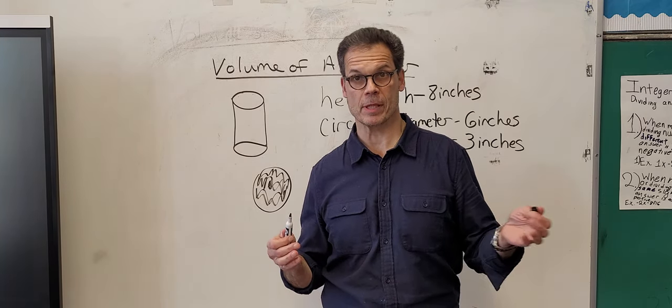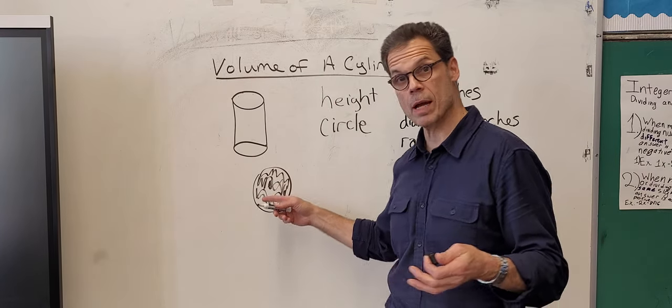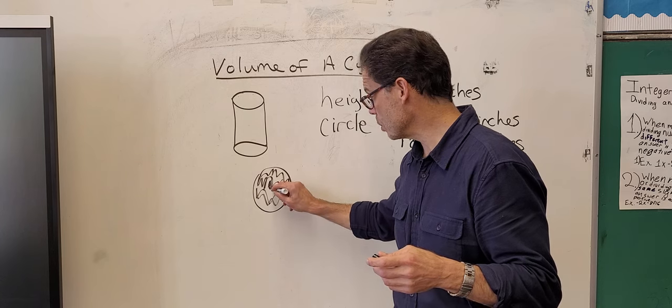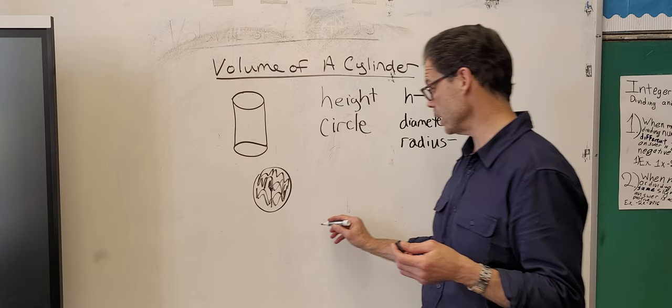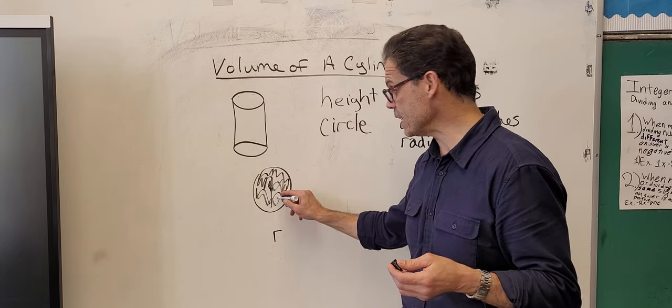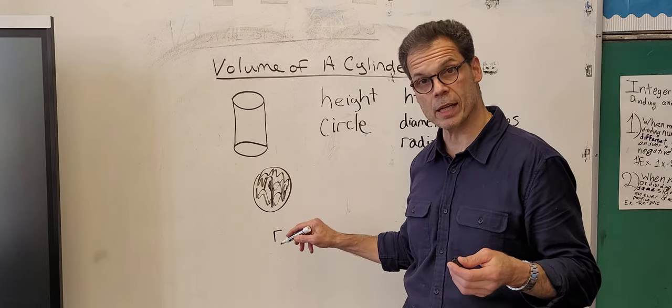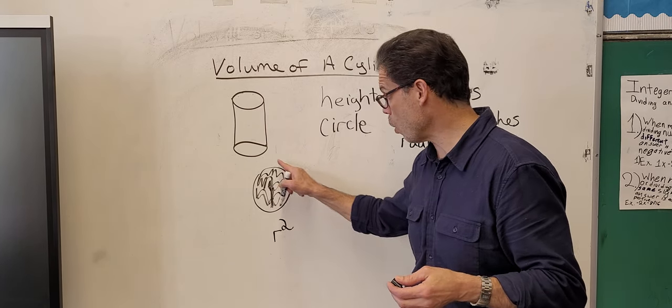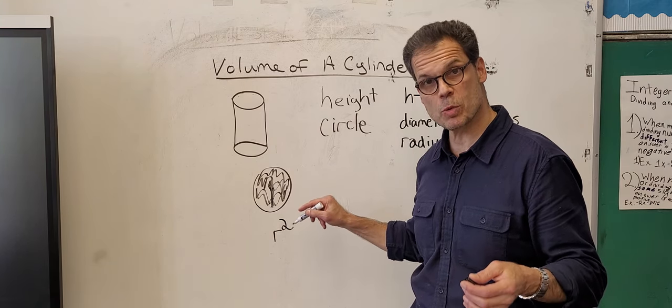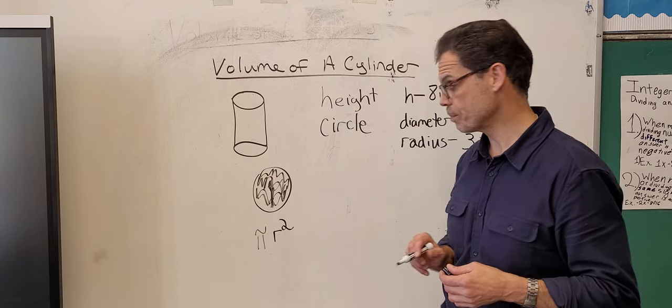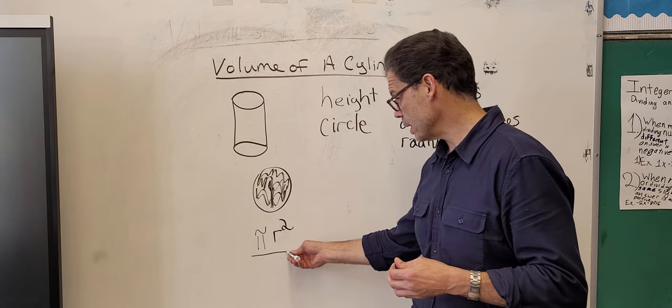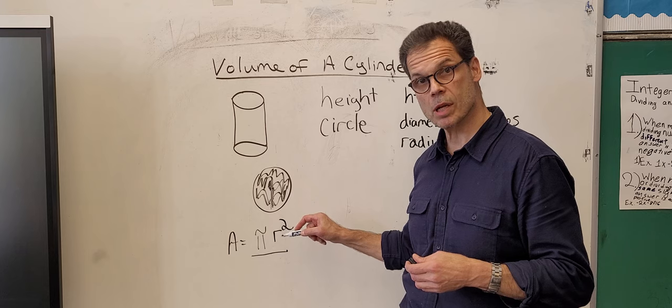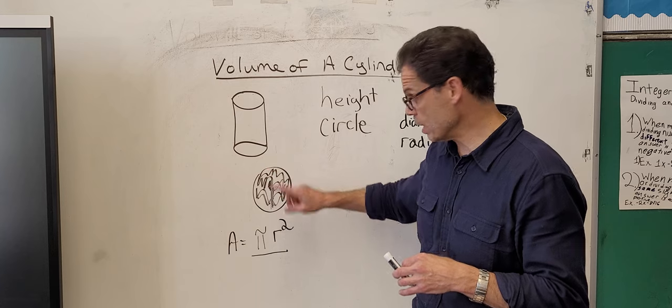A long time ago you learned that to calculate area you multiply two things. We find the radius which is halfway across. But then we want the whole covering, so we square radius. And then we want not just radius squared for the covering but the whole thing around it, and the way we do that is with something called pi. This right here is the area of the circle.